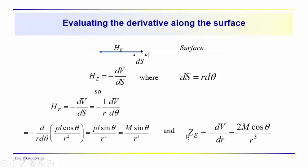For comparison, the vertical component is 2 times the dipole moment times the cosine of theta over R cubed. Both components — the horizontal field intensity and the vertical field intensity — vary as 1 over R cubed.